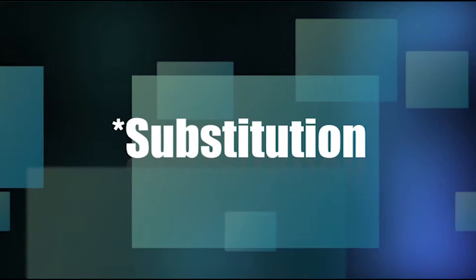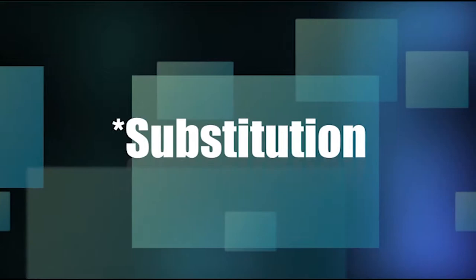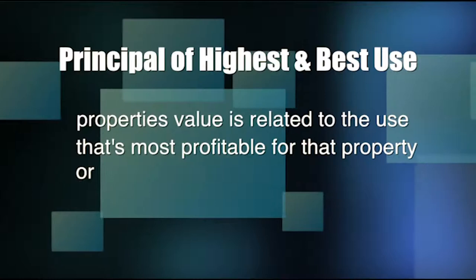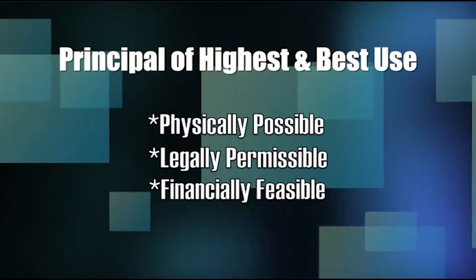The value of any building is based on several principles, including highest and best use, supply and demand, and substitution. The principle of highest and best use states that a property's value is related to the use that is most profitable — the use likely to produce the greatest net return — and that use must be physically possible, legally permissible, and financially feasible. For example, a pharmacy like CVS or Walgreens might pay more for a great corner location than a gas station or mini-mart would, based on what income each can generate in that location.